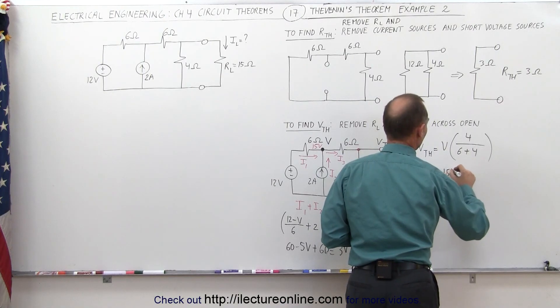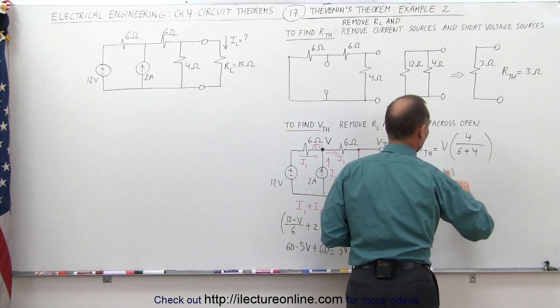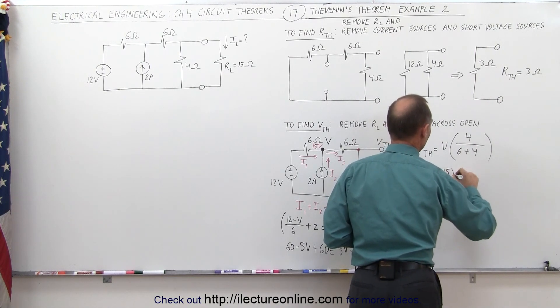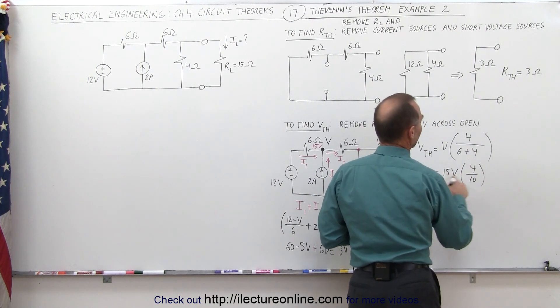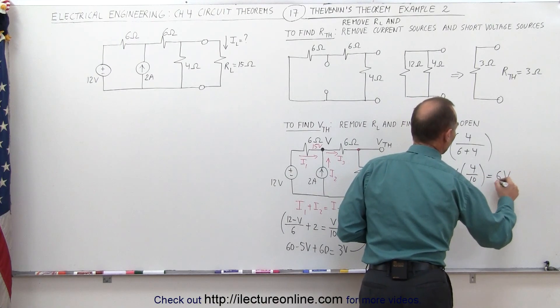That makes this equal to 15 volts times 4 divided by 10. That is equal to 6 volts.